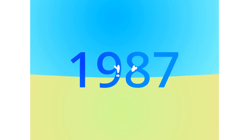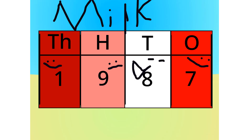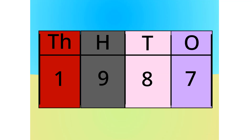Do you see anything that relates to this number? It's blue. This number is made up of 1 thousand, 9 hundreds, 8 tens, and 7 ones. See? Let's see this in block form, shall we?